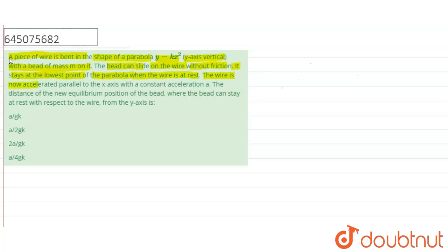The wire is now accelerated parallel to the x-axis with a constant acceleration a. The distance of the new equilibrium position of the bead where the bead can stay at rest with respect to the wire from the y-axis.